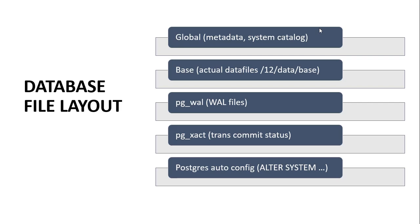For the database file layout, both configuration files and database files are stored in a single cluster directory. Under the global directory, metadata and system catalog information are available. Under the base directory, the actual database files reside. The pg_wal directory stores the write-ahead log files, and under pg_xact we have transaction commit status files.